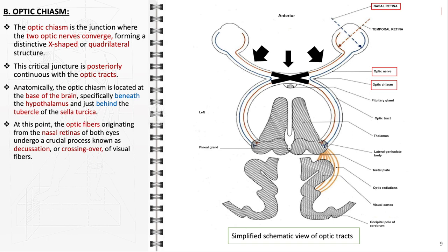The most significant aspect of the optic chiasm is the process of decussation, or the crossing over of optic fibers. The fibers from the nasal, medial side of each retina cross to the opposite side at the chiasm. This crossing pattern is essential for binocular vision, enabling the visual fields of both eyes to overlap, providing depth perception and a wider field of view. The partial crossing ensures that visual information from the right half of the visual field, perceived by both eyes, is processed in the left hemisphere of the brain and vice versa. Lesions in this area can lead to specific visual field defects such as bitemporal hemianopia, where the outer, temporal halves of the visual field in both eyes are lost.